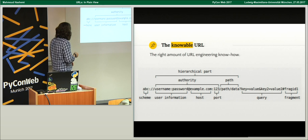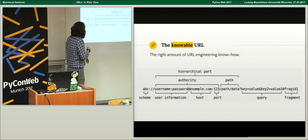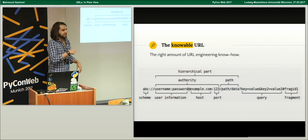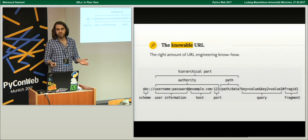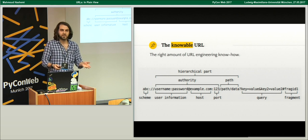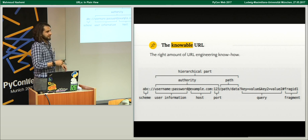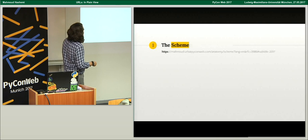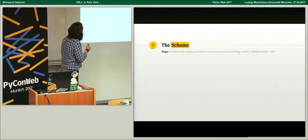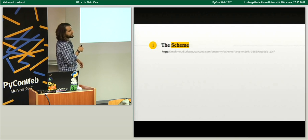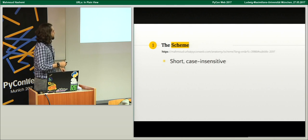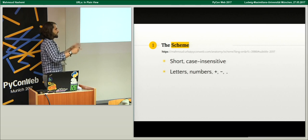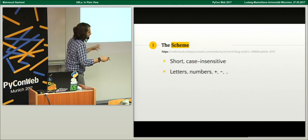What surprises people is that there are so many parts to a URL: the scheme, user info, host, port, query string, fragment, and path. Each of these has slightly different encoding characteristics and slightly different semantics. We're going to start at the scheme — here we're doing HTTPS. The important thing about the scheme is that it's short, case-insensitive, and consists of just letters, numbers, plus, minus, and dot.